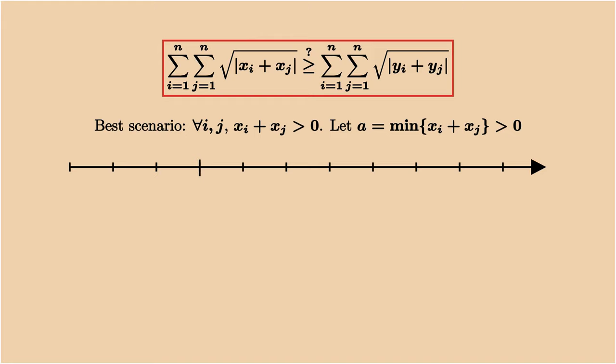Let's put all these numbers xi plus xj on the x-axis. Then there is one closest to the origin called a. Then shifting the entire sequence by a to the left makes the smallest sum equal to 0, and the others remain positive.